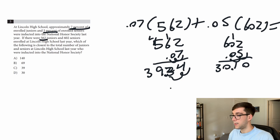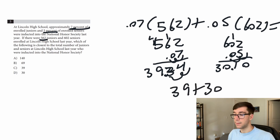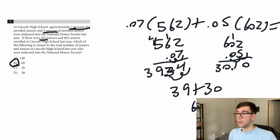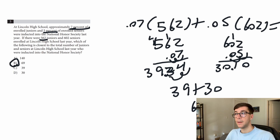Calculating: 562 times 0.07 equals approximately 39, and 602 times 0.05 equals 30. So 39 plus 30 equals 69, and that is our answer. This one was more straightforward — we wrote one equation, everything was given, and we just simplified. Now let's look at the last problem, which might be the trickiest.